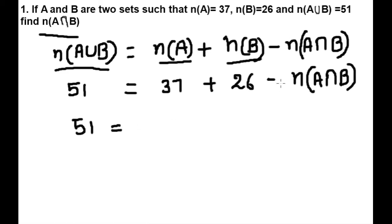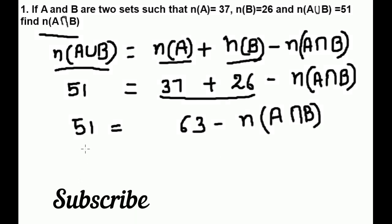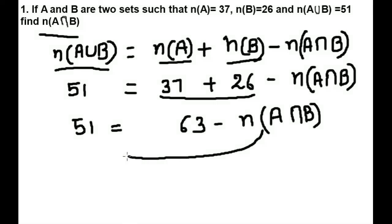When we add these two, this is 37 and 26 minus n(A intersection B). Now we can transfer this to this side and 51 to this side.